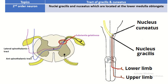There is a key difference between other sensory tracts and the tract of gracilis and cuneatus. In other tracts, the axon of the first-order neuron synapses with the second-order neuron, and the axon of the second-order neuron crosses to the opposite side of the spinal cord. But here, the central process of the first-order neuron remains on the same side, then synapses with the second-order neuron located on the same side at the lower part of the medulla oblongata. The axon of the second-order neuron then crosses to the opposite side of the medulla oblongata.